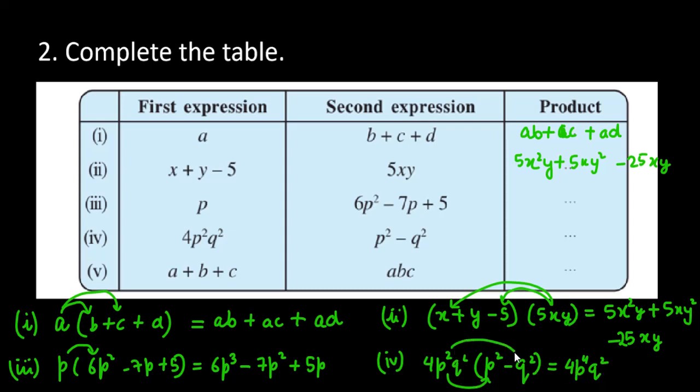अब इसी डर्म को, जो आपकी monomial डर्म है, उसको आप minus Q square से मडिप्लाय करोगे. So, this will be minus 4P square Q raised to power 4. This is your answer for the fourth part. It is 4P raised to power 4 Q square minus 4P square Q raised to power 4.